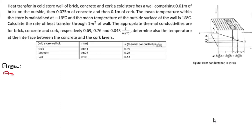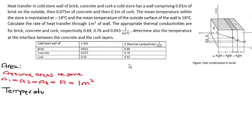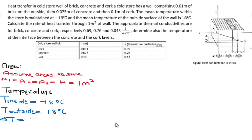Now let's start calculating. The first step is to write down everything that you're given. We are given the area, and for this scenario we can assume that A1 equals A2 equals A3, so A is 1m². The temperature inside is minus 18 degrees Celsius and the temperature outside is 18 degrees Celsius. The change in temperature, delta T, is calculated as outside minus inside — negative minus negative gives a positive — hence delta T equals 36 degrees Celsius.